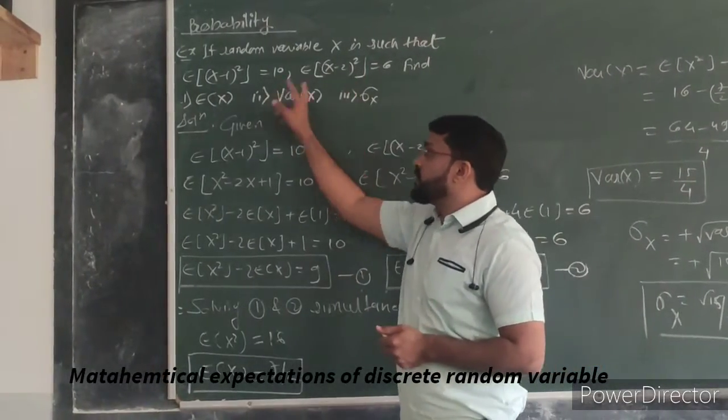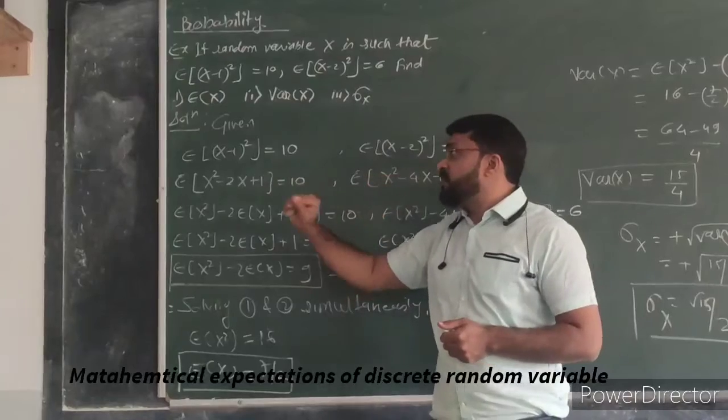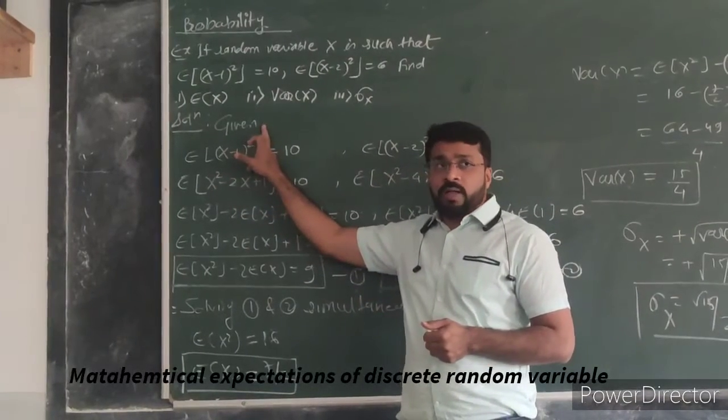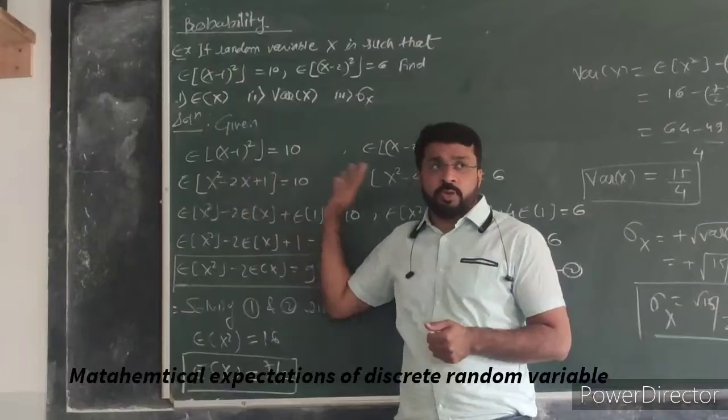The given quantity is from the answer. Now (X minus 1) square will be given as X² minus 2X plus 1.